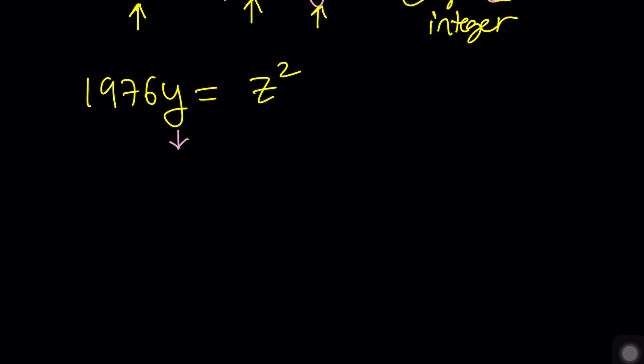First of all notice that it's divisible by two. It's two times 988, and 988 is two times 494, and then 494 is also divisible by two. I think it is two times 247. Here's the critical part. Is 247 a prime number?